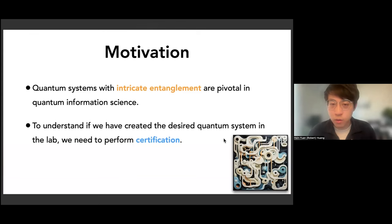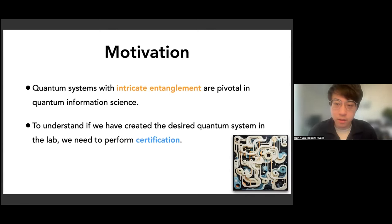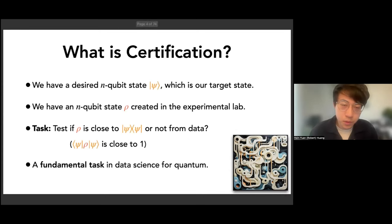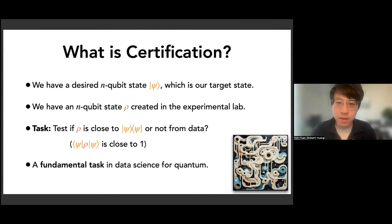We have to create quantum systems that exhibit certain specific forms of entanglement. However, in reality, whenever we try to do so, there will always be all kinds of errors and noise. In order to understand and verify if we have really created the desired target system in the lab, we have to perform a task known as certification. Here is a simple introduction to this problem.